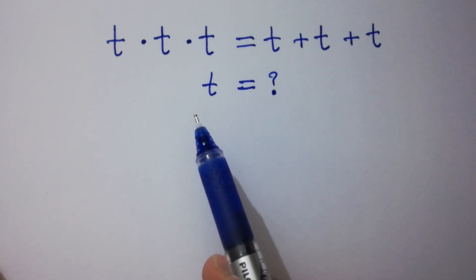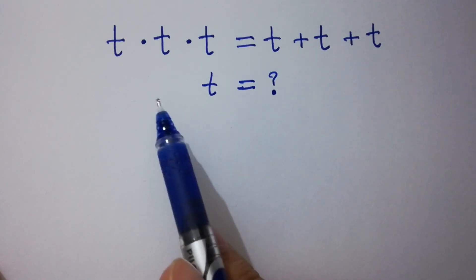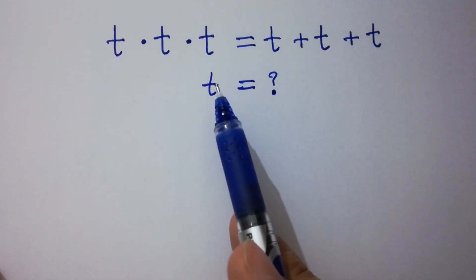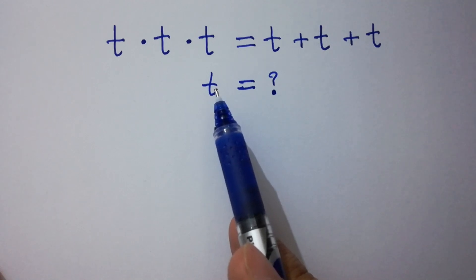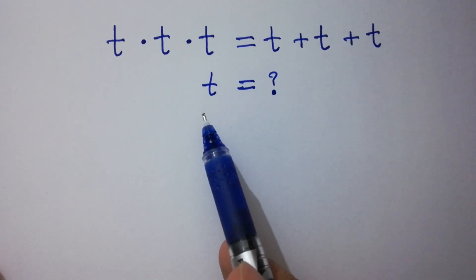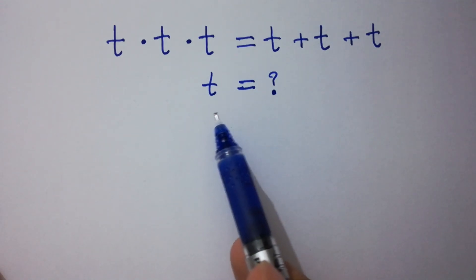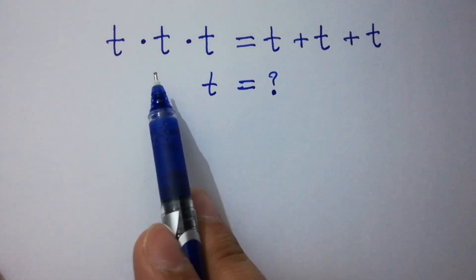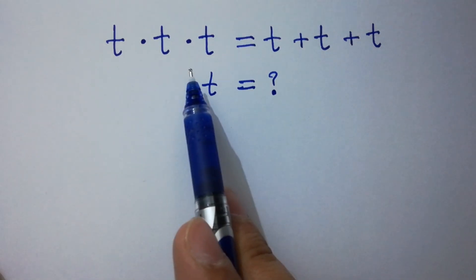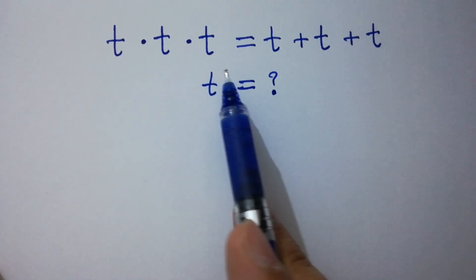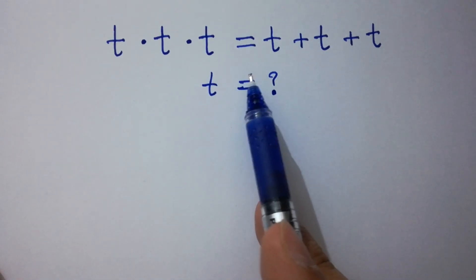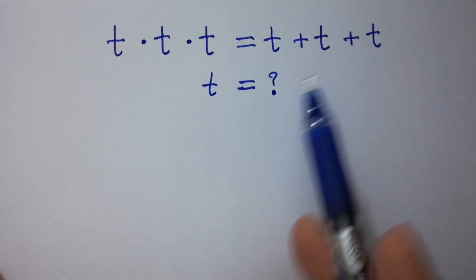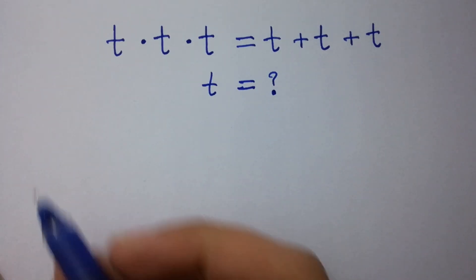Hello friends, we have a nice math olympic algebra problem. Find the value of t if t times t times t equals t plus t plus t. Let's have a solution.